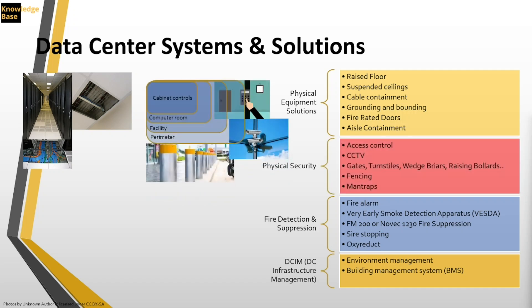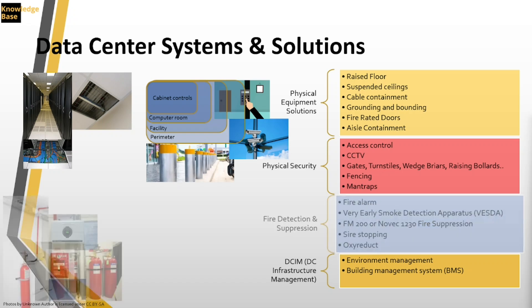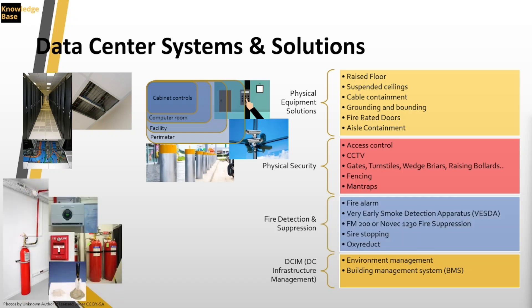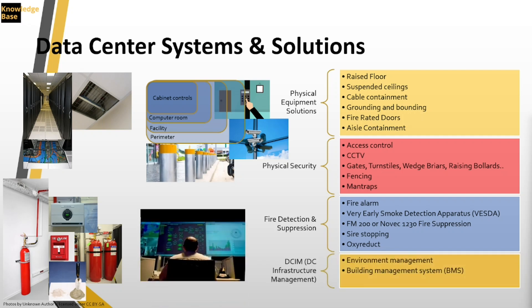We also have the physical security system comprising access control, CCTV, gates, fencing, and man traps. Later I'll be focusing on a layered approach to protecting a data center — five layers of data center protection. There's also fire detection and suppression for the safety of people operating there. Additionally, there is the data center information management system, which brings everything together and gives operators a view of what's going on.